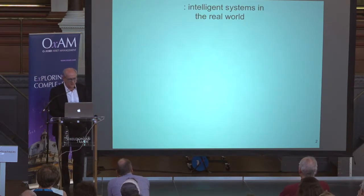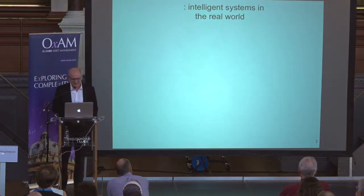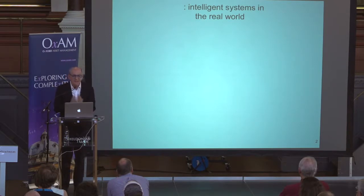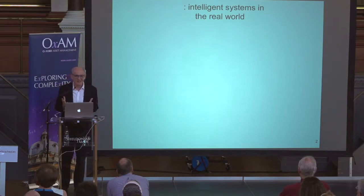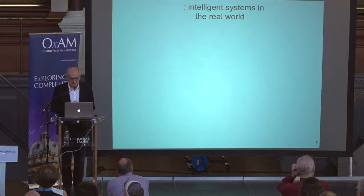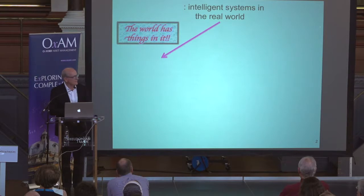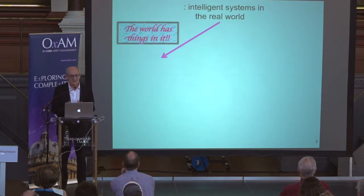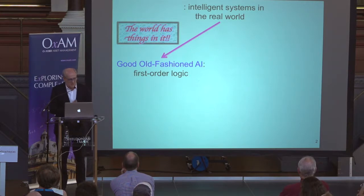I want to take you back to the 1950s when the field of AI was studying the question of how to build intelligent systems in the real world, and we really had no clue how to do this whatsoever. It was a blank slate. We knew that people were intelligent, and what were we going to do to make machines intelligent? John McCarthy and other people noticed a very important thing about the real world, which is that it has things in it.